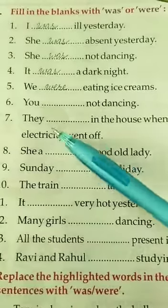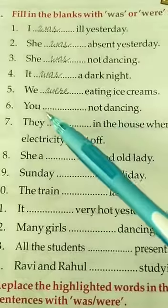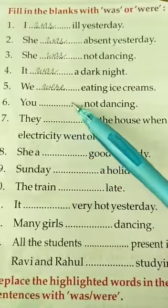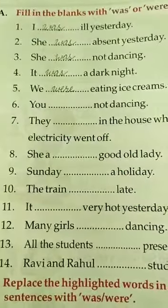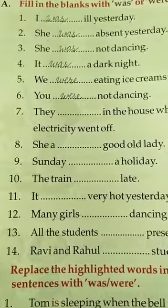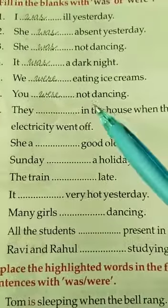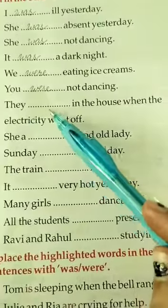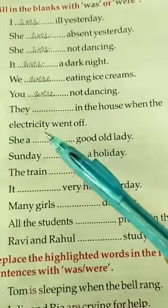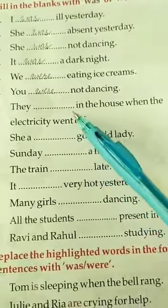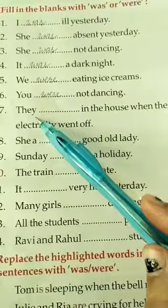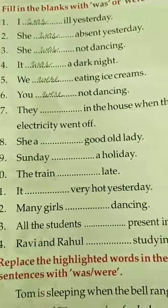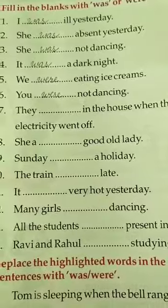Sixth part: 'You ___ not dancing.' The pronoun 'you' is given, and with 'you' we always use 'were'. Answer: You were not dancing. Seventh part: 'They ___ in the house when the electricity went off.' 'They' is a plural pronoun, so we use 'were'. Answer: They were in the house when the electricity went off.